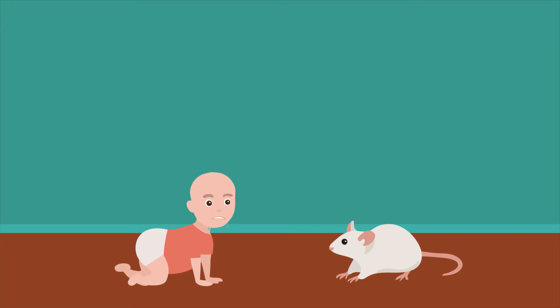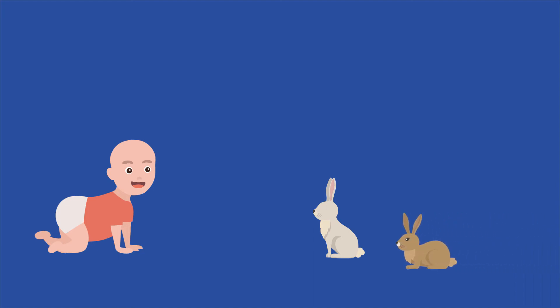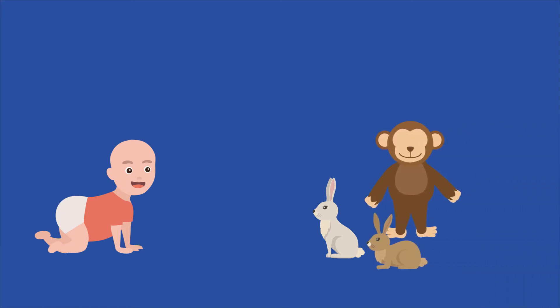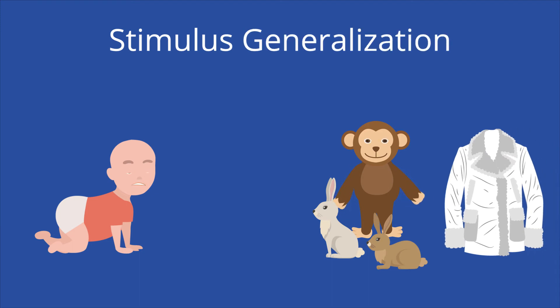Thus, the experimenters were able to turn the neutral stimulus of the white rat into a conditioned stimulus and provoke a conditioned response of fear. After the initial trials, Little Albert went back home. A week passed and Little Albert was brought back in and exposed to other animals. When presented with a white rat, any other furry animal, or even a fur coat, he burst into tears and attempted to crawl away. This is known as stimulus generalization, because Albert began to fear other white furry objects due to their similarity to the white rat.